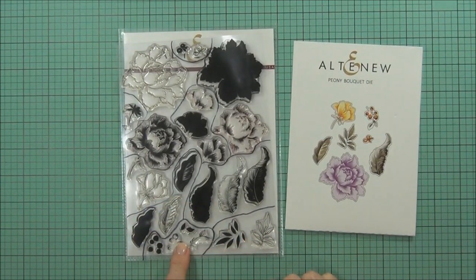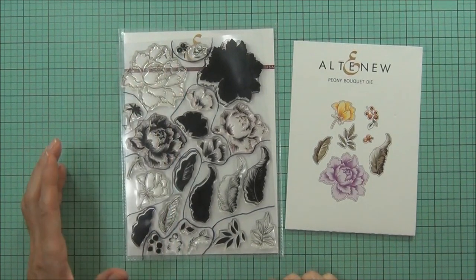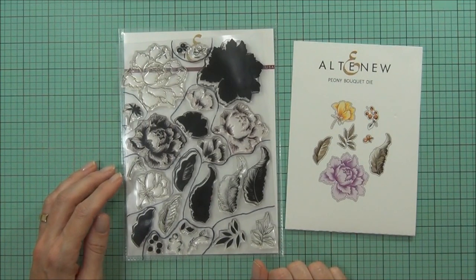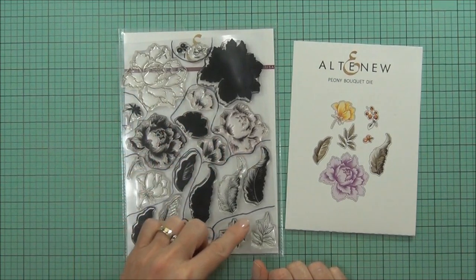So this set actually has two different flowers and three different leaves. It also has a couple of lots of berries in there, and it does actually look like there's a lot of stamps in this set, but because it's a layering set there's multiple images for the one image.